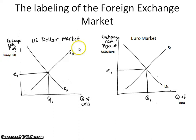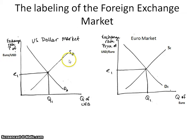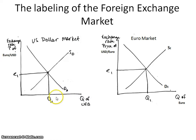You have an upward sloping supply curve — it's the supply of dollars that the euro market is looking for — and then you have a downward sloping demand curve for the demand for dollars. Quantity is labeled Q, and a lowercase e for the exchange rate.